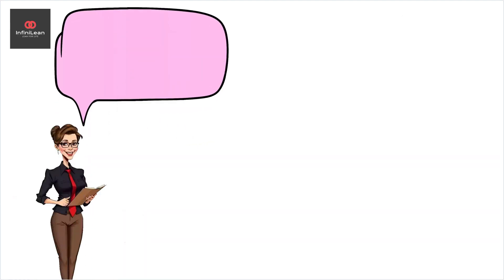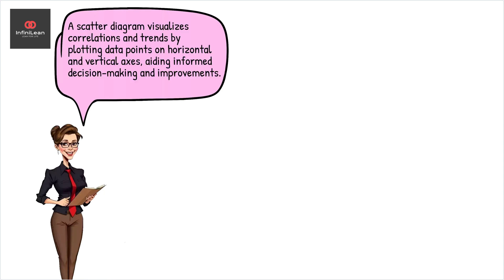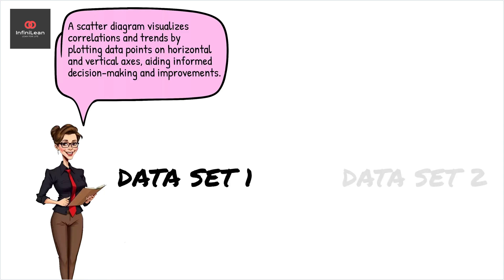A scatter diagram can reveal any correlations or trends by plotting data points on a horizontal and vertical axis. This insight is crucial for making informed decisions and improvements.